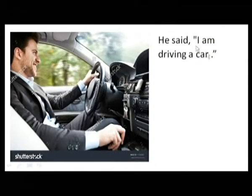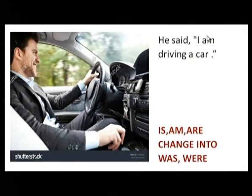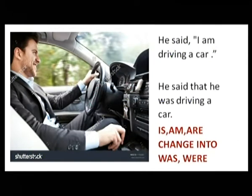Now let's see what happens when our reporting verb is in the past tense. Looking at a picture: he said, I am driving a car. In the direct speech, the verb inside is 'am'. Your category here is am and are — they all change into was and were. So in indirect speech it will be: he said that he was driving a car. 'Am' changed to 'was', and 'I' changed to 'he'.